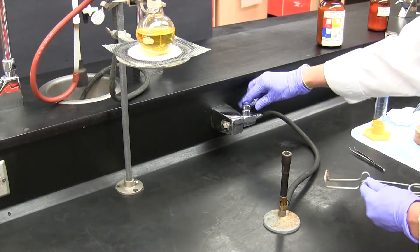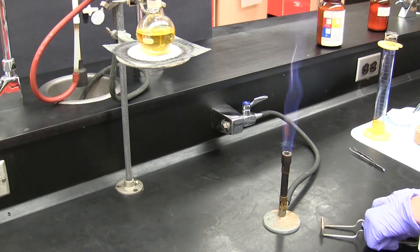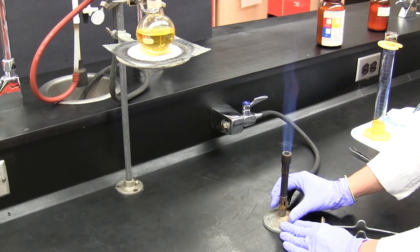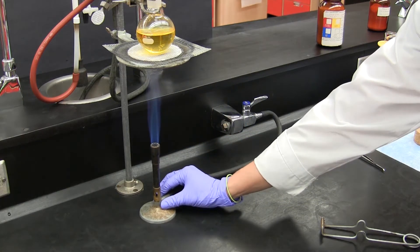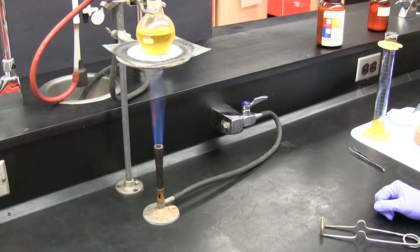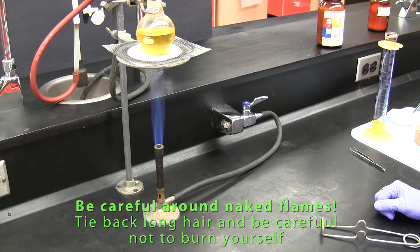Here we're going to boil the reaction mixture by heating with a Bunsen flame. The solvent here is water but if we are using a flammable solvent we would be better to use another form of heating one which doesn't involve the use of a naked flame. You should always be careful when using a Bunsen burner, tie back long hair and be careful not to burn yourself.